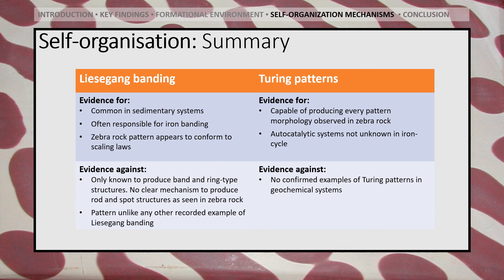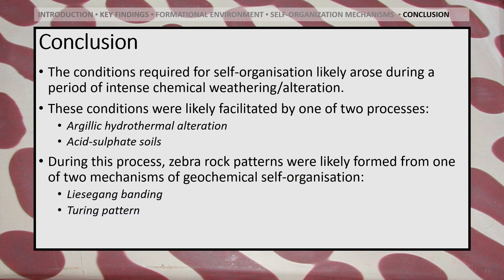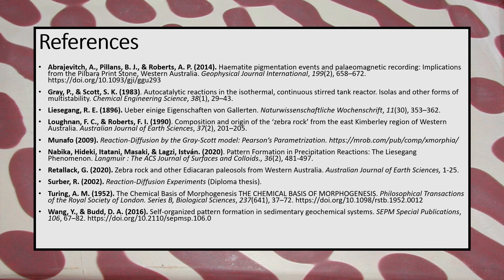In summary, while Liesegang banding is commonly responsible for iron banding in sedimentary rocks and zebra rock appears to conform to the scaling laws, Liesegang banding should not be able to produce the spot and rod pattern structures also seen in zebra rock. In contrast, Turing patterns — while presently unknown in geochemical systems — are unique in their ability to reproduce every different pattern morphology observed in zebra rock. In conclusion, the patterns observed in zebra rock most probably arose during a period of intense chemical weathering or alteration, facilitated either by the acidic hydrothermal alteration of iron-bearing sediments or the acid sulfate weathering of waterlogged soils. Geochemical self-organisation arose either by Liesegang banding or the development of Turing patterns. Further analysis is planned to determine which of the above processes are the most likely mechanisms to explain how exactly the zebra rock got its stripes. Thank you all for listening.